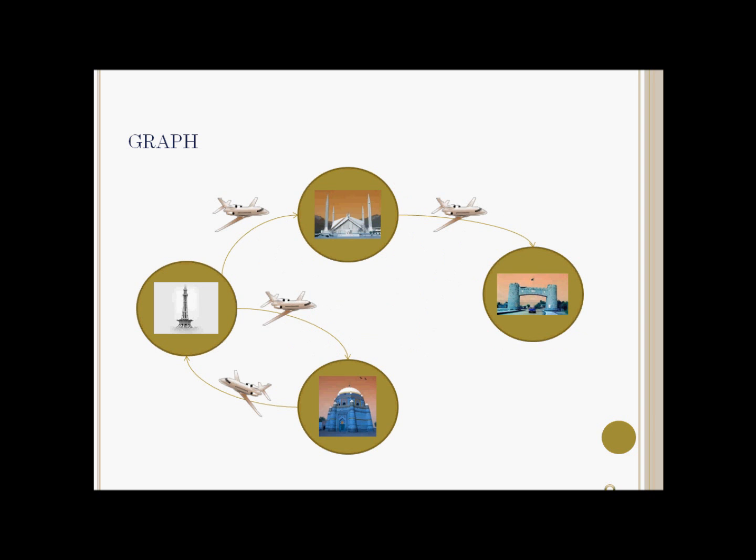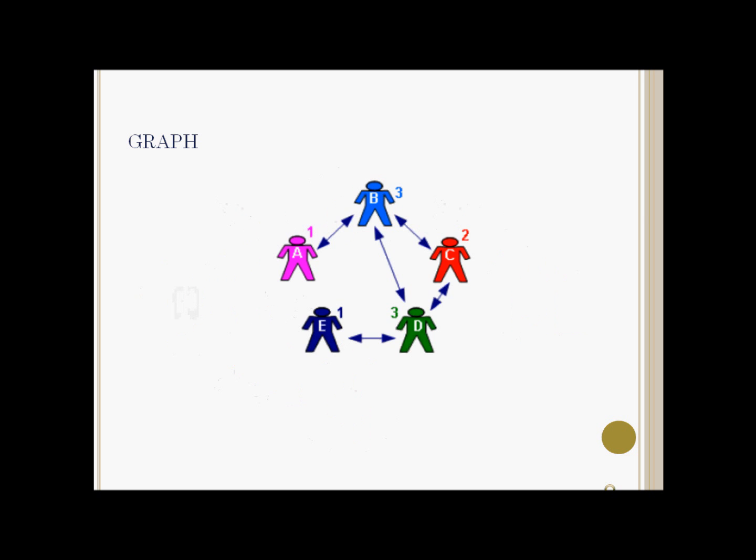This is a graph that represents a flight network among some cities. Each vertex in this graph represents a city and each edge represents a flight between two cities. This is a mutual friendship graph, where each vertex is a person and each edge represents a friendship between two persons.